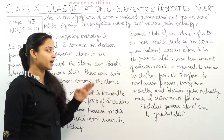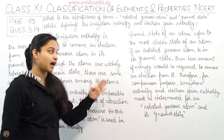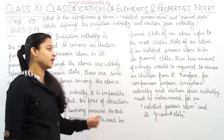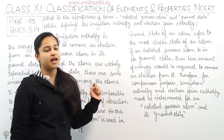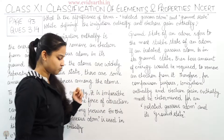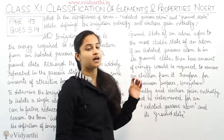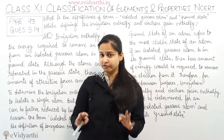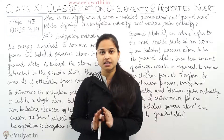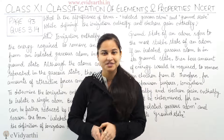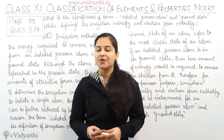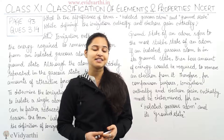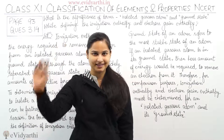Therefore, for comparison purposes, ionization enthalpy and electron gain enthalpy must be determined for an isolated gaseous atom in its ground state. I hope these two terms — isolated gaseous atom and ground state — are now clear to you. If anyone has doubts, please ask in the space given below. This is Rakhi, and it's time to say goodbye. Bye!